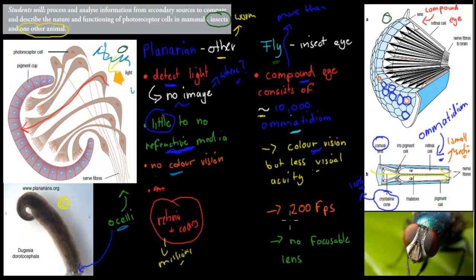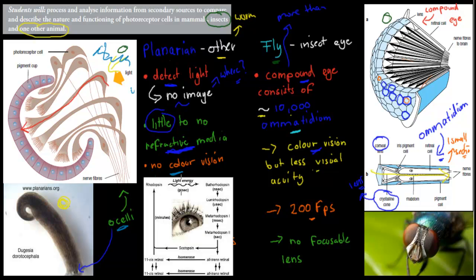One of the benefits of having the compound eye is it captures about 200 images per second, whereas we do about 50. If you remember the rhodopsin cycle we talked about — light energy breaks apart rhodopsin, produces a cascade of events, a chemical signal is sent to the brain for interpretation, and then it gets recycled. In the human eye, we recycle it fast enough to do about 50 frames per second. But in the actual fly or insect eye, this whole event happens a lot faster, which is why they have 200 frames per second.